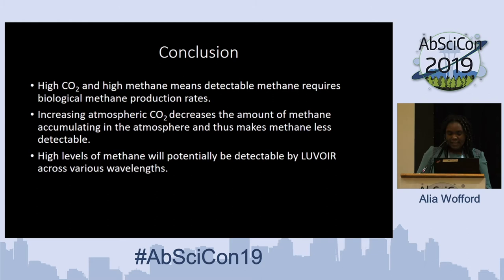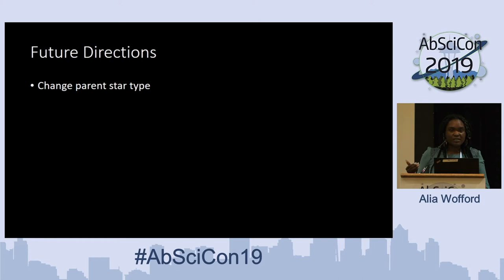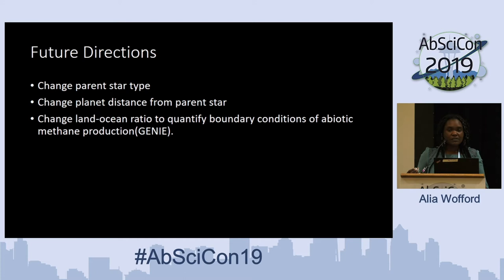For future directions, we plan to change the parent star — currently we're using Archean Sun, but we have templates to model M-dwarfs such as AD Leo and Proxima Centauri, which can change the spectral features observed. We're also looking at changing planetary distance from the parent star; currently at 1 AU, changing that distance also affects spectral features. A long-term goal is to use an Earth system model known as GENIE to explore boundary conditions for abiotic methane production.